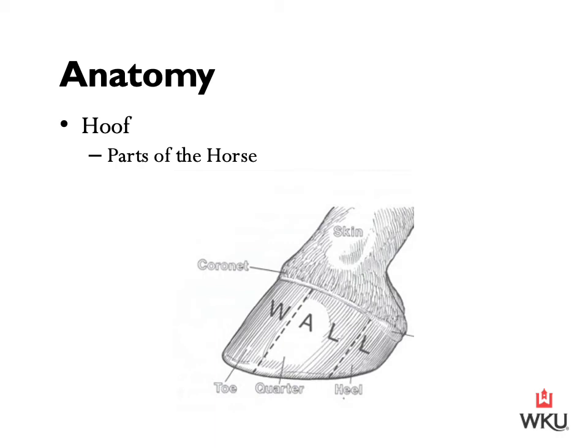Hoof grows fastest during periods of warm temperatures and moisture, corresponding with springtime and lengthening daylight hours. Making sure we're able to identify the parts: at the top is the horse's skin — this is our pastern — then we have our coronet or coronary band, then the wall of the hoof, and the wall broken into different sections: the toe, the quarter, and the heel.